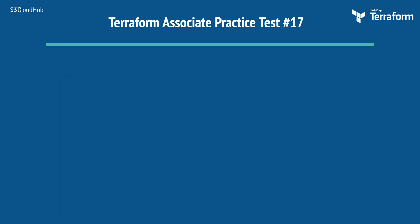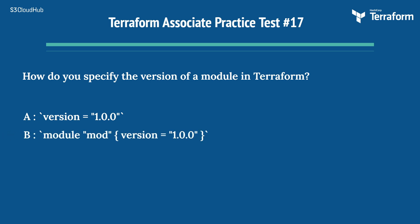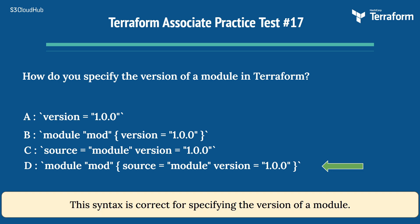The seventeenth question is: how do you specify the version of a module in Terraform? Option A: version = "1.0.0". Option B: module mod { version = "1.0.0" }. Option C: source = "module" version = "1.0.0". Option D: module mod { source = "module" version = "1.0.0" }. The right answer is Option D. This syntax is correct for specifying the version of a module.